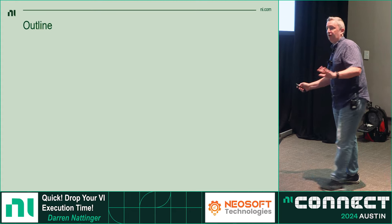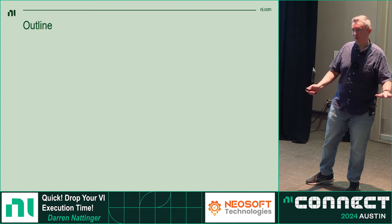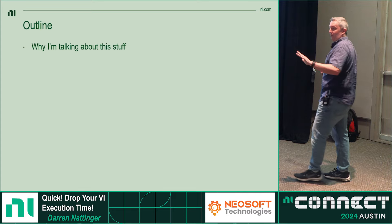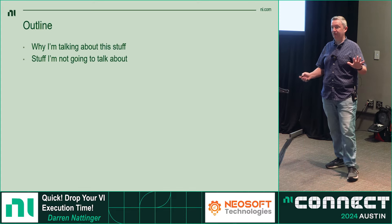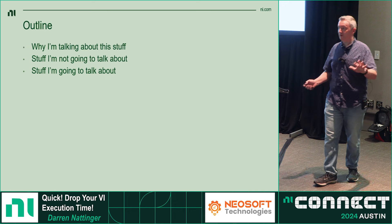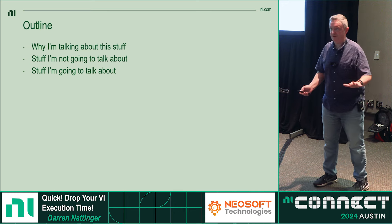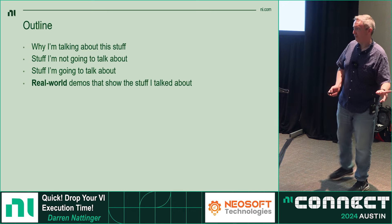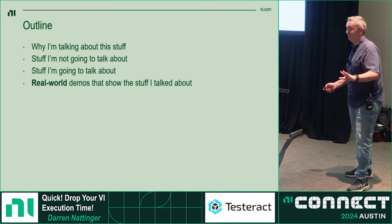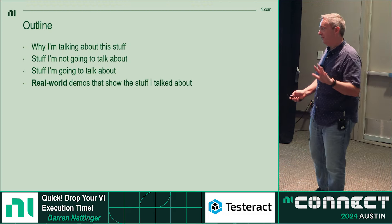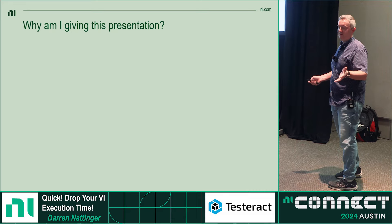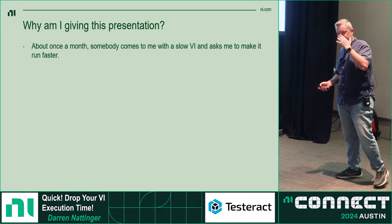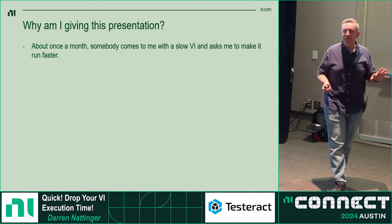I've got a very detailed outline about what I'm going to talk about: why I'm talking, stuff I'm not going to talk about, then stuff that I am going to talk about, then demos of the stuff I just talked about. First of all, why am I giving this presentation? I would venture to say that about once a month, somebody comes up to me.